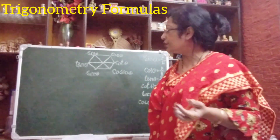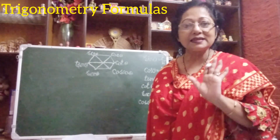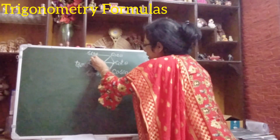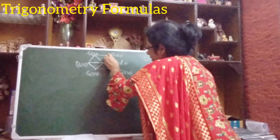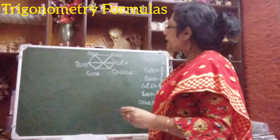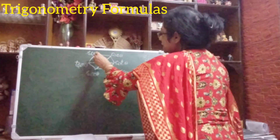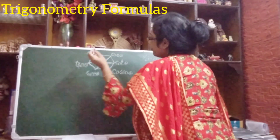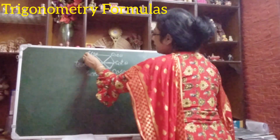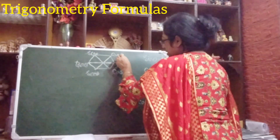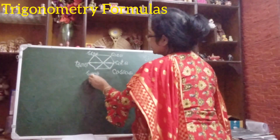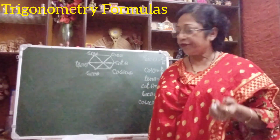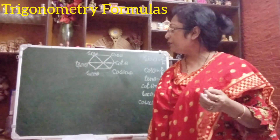Let us start. Here you can see I have drawn one hexagon. A hexagon is a closed figure which has six sides and six vertices. I have drawn all three diagonals. Now, instead of naming the vertices A, B, C, D, E, F, I have given them the names of the trig functions: sine theta, cos theta, cot theta, sec theta, cosec theta, and tan theta.